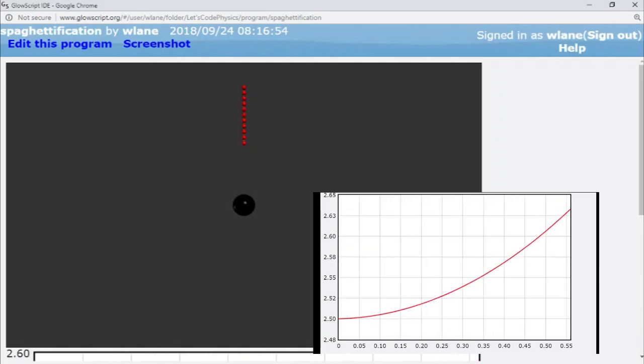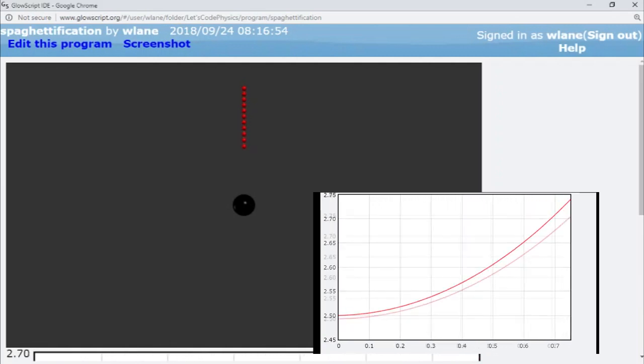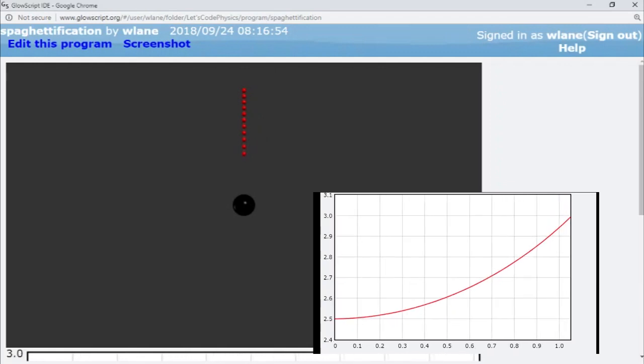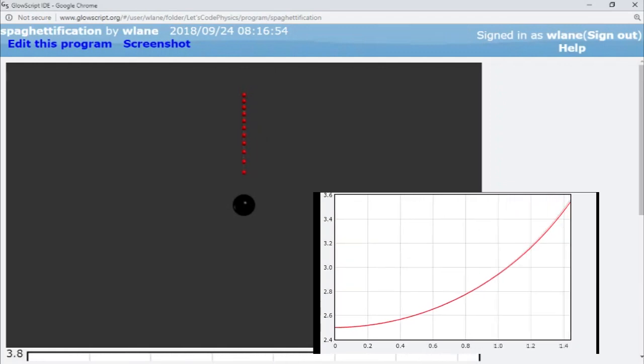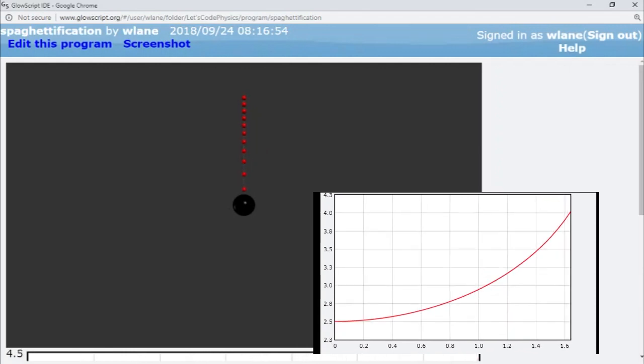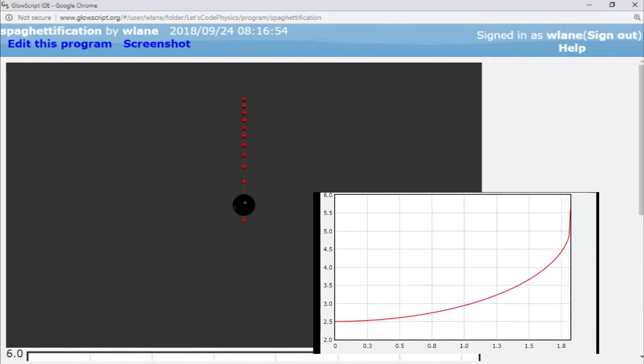With each atom experiencing a different strength of the gravitational force, they accelerate at different rates, causing the body to stretch. Our graph of the body's length shows that the length doubles before the lowest atom falls into the black hole. That is some serious spaghettification.